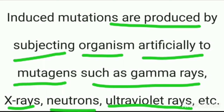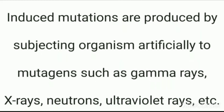Induced mutations occur artificially — it means they are man-made; humans cause them, or humans induce them. As for other causes, so far they have not been fully identified — how induced mutations are induced otherwise is not yet fully known. So mostly we say these are man-made, induced by human beings. The mutagens here include gamma rays, X-rays, neutrons, and ultraviolet rays.